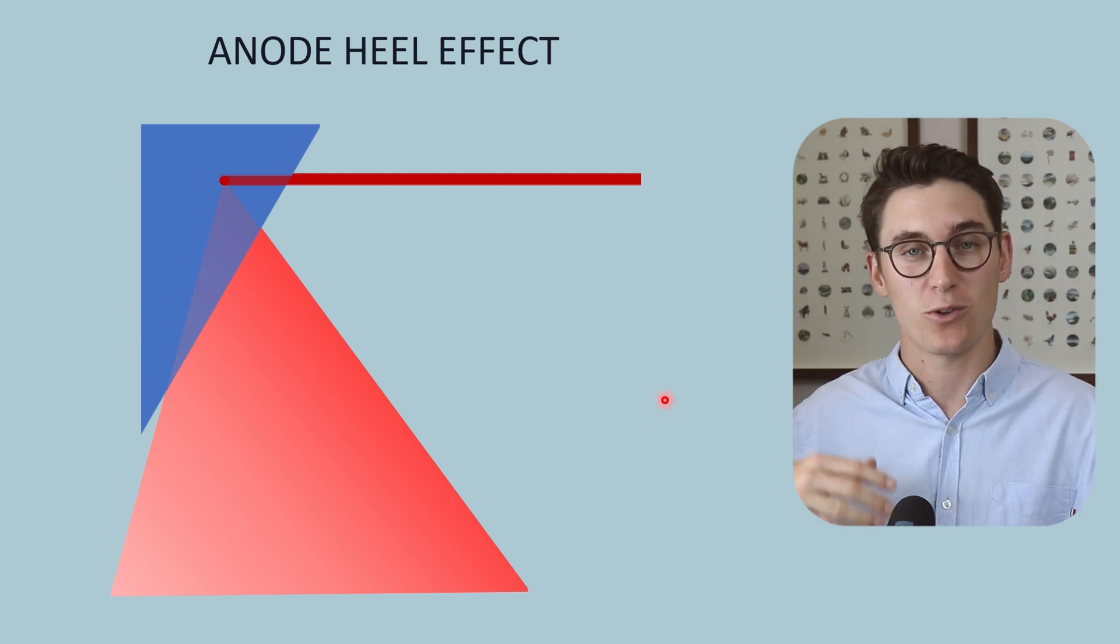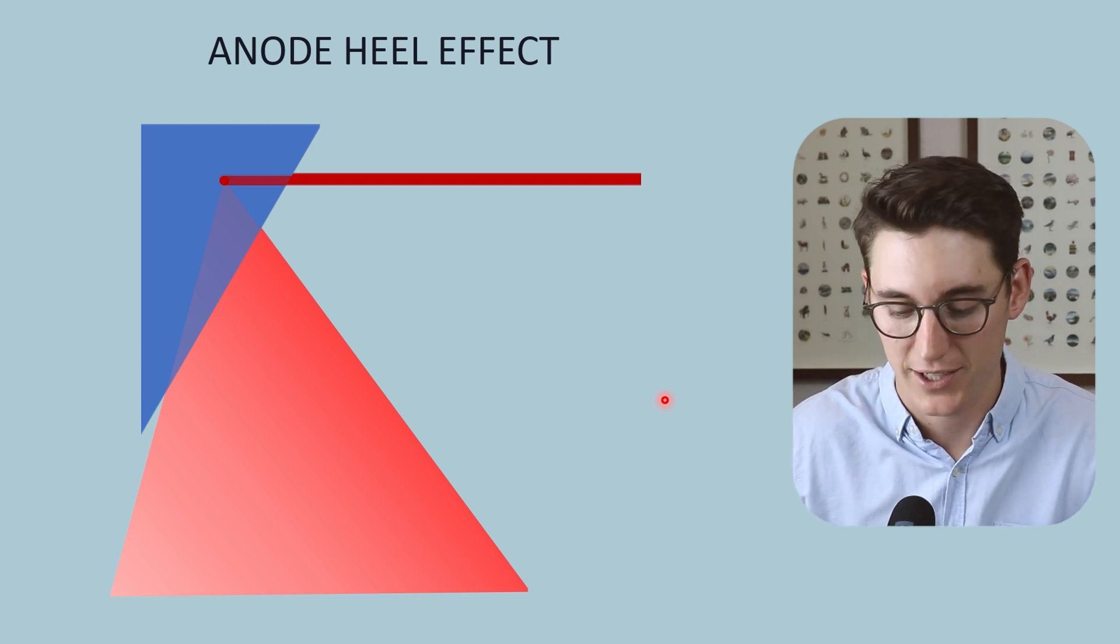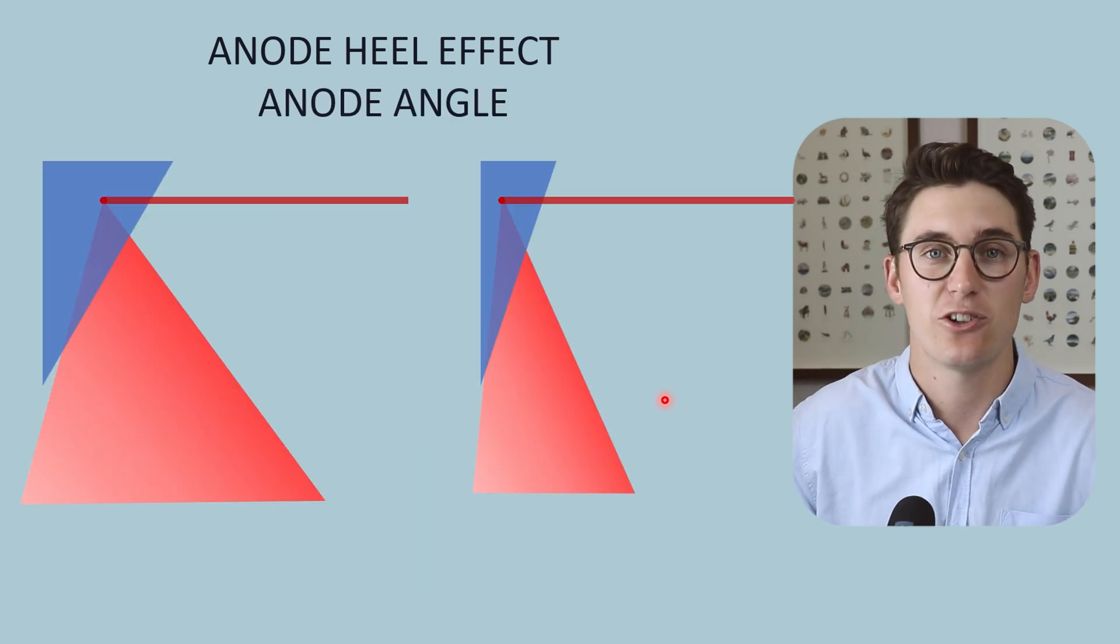So there are three parameters that we can change in order to manipulate the anode heel effect. Now the first is the anode angle.